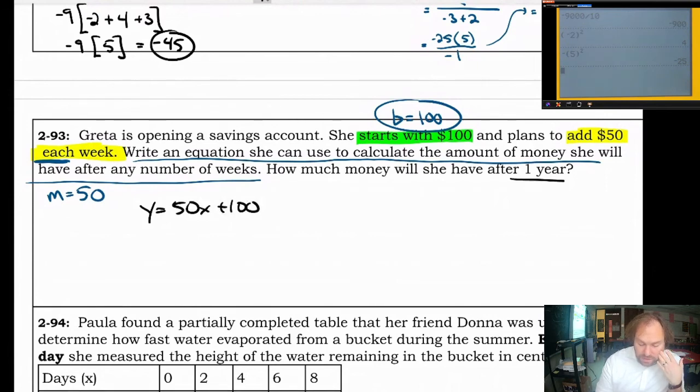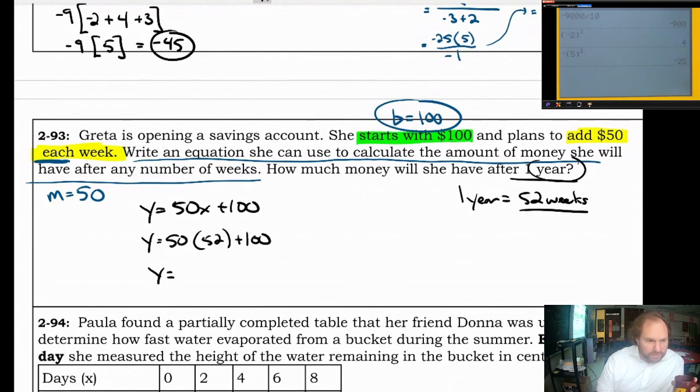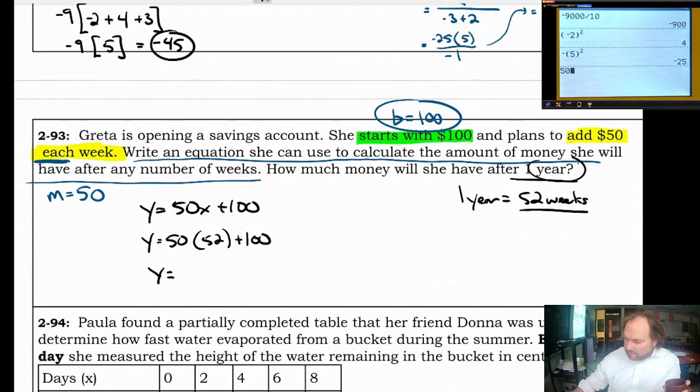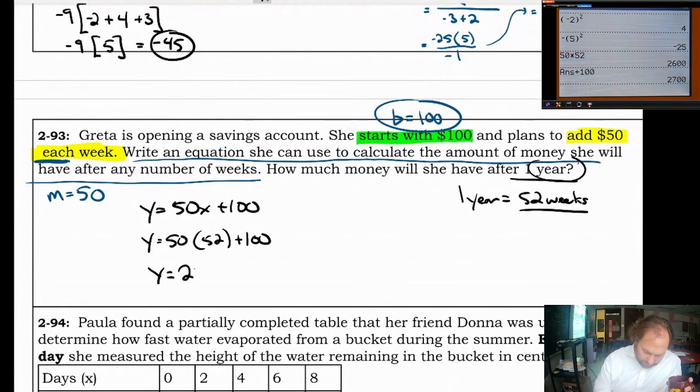How much money will she have after one year? I hate these kind of problems. I hate when units are a confusion thing. One year is about 52 weeks. I don't know if you even know that or not. That's kind of a prior knowledge thing. I'm not sure if Algebra 1 students are aware of that fact. What we're going to do here is we're going to do 50 times 52. We're going to add it to 100. I'm going to use a calculator for this because I would hate to expect you to do that in your head. 50 times 52. She's going to add about $2,600 to this account and add the original $100 she had on there. She'll get $2,700 is what she has after 52 weeks.